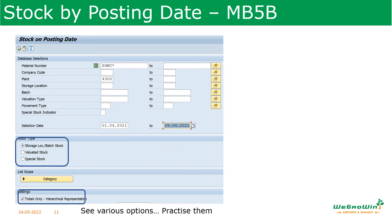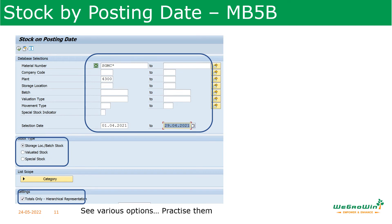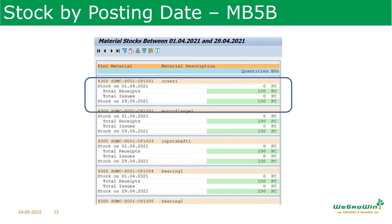Next, if you want to see stocks based on a date range — how much stock was varying from one date to another — that is done using report MB5B. In MB5B, you can enter material, company code, plant, and a date range. You can also select the stock type: storage location stock, valuated stock, or special stock. After selecting all parameters and executing, the report shows opening stock, total receipts, total issues, and closing stock for the selected date range. MB5B gives a consolidated view, and changing the hierarchy in the selection parameter shows it in different formats.